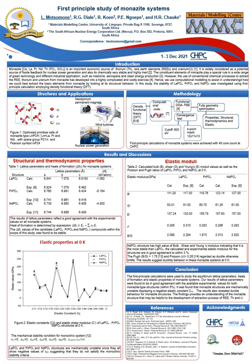Table one lists the calculated and experimental lattice parameters as well as the heat of formation. Lattice parameters are in good agreement with the experimental values. The heat of formation was estimated by the total energy of the compound minus the sum of the individual total energy of each element in the compound. Because PrPO4 has the most negative value of heat of formation, this indicates that it is the most stable structure.